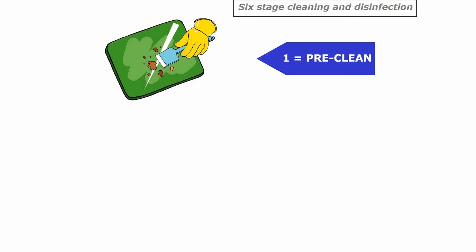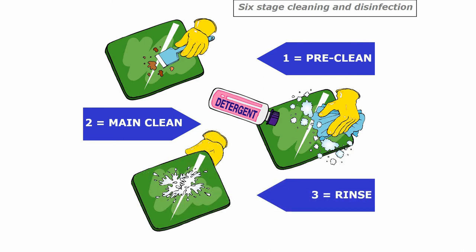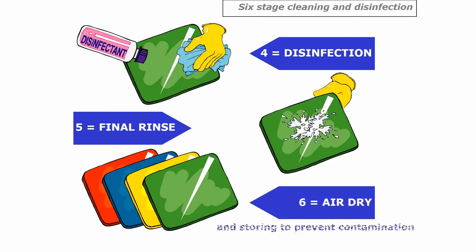Let's have a look at the six-stage cleaning and disinfection process, using a preparation board as an example. First, a pre-clean — the initial removal of any large food particles, which can go into a recycling receptacle. Then a main clean using a detergent with water — remember this does not kill or reduce bacteria, it just removes dirt, grease, and grime. We don't want to leave any detergent on the board, so we do a rinse cycle. Once rinsed, there might still be bacteria present, so we apply a disinfection phase using a chemical disinfectant. We don't want any residue, so we do a final rinse, then air dry and store to prevent contamination.